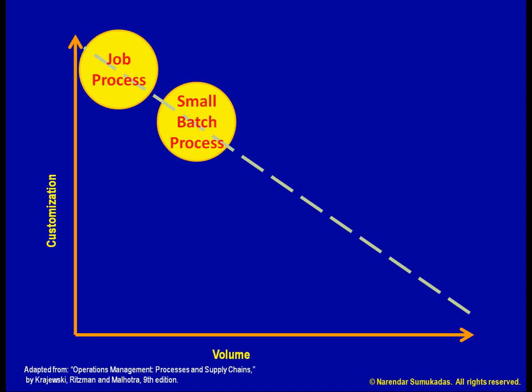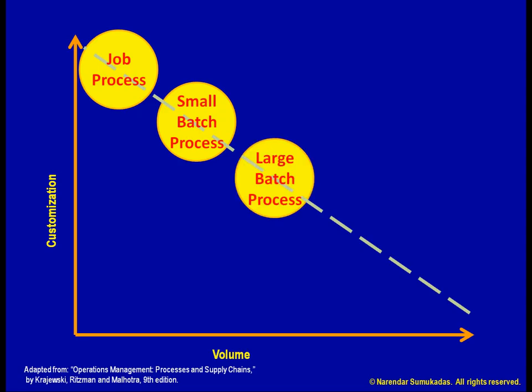The batch sizes here can range from small to large, giving us a range of process choices along this portion of the diagonal.